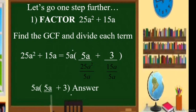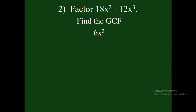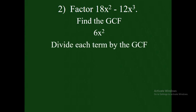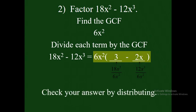Let us have another example: factor 18x squared minus 12x cubed. The first thing we need to do is find the GCF. The greatest common factor of these two terms is 6x squared. Now divide both terms by 6x squared: 18x squared divided by 6x squared equals 3, minus 12x cubed divided by 6x squared equals 2x. So the answer is 6x squared times the quantity 3 minus 2x.